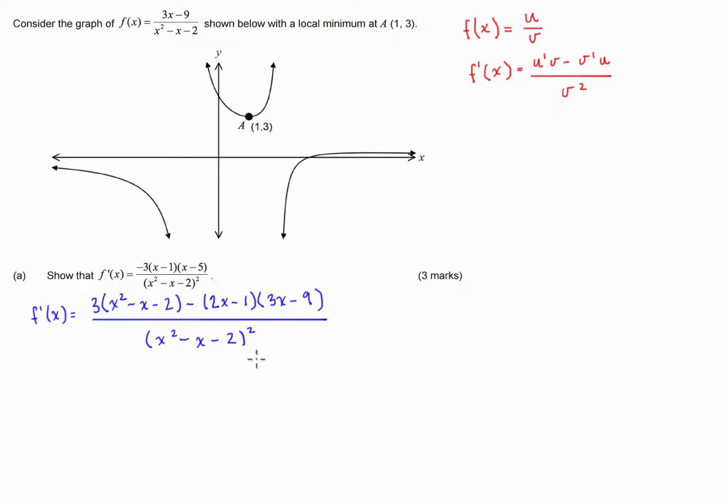So if we weren't asked to simplify a derivative in an exam, this is where we could leave it. Now because we've been asked to show that this is essentially the same thing, we're going to have to simplify. If we look at the denominator, it's exactly the same as what we've been given. So our denominator is good to go.